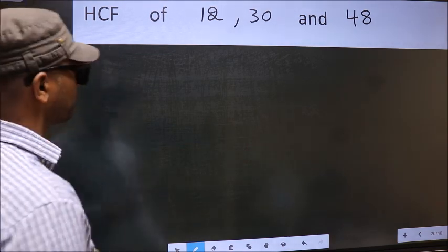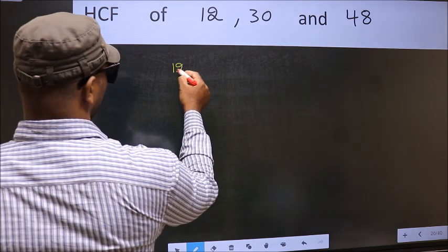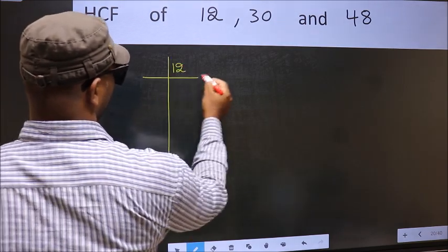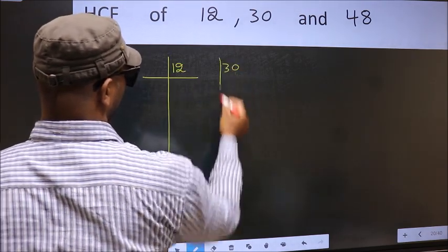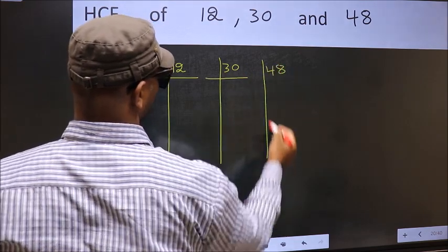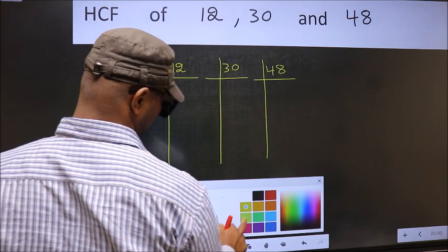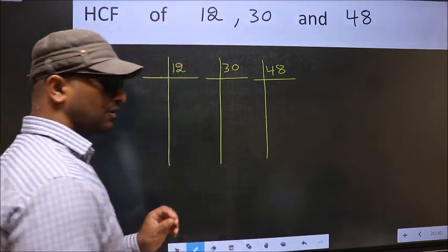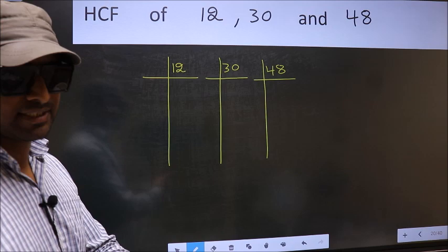What I mean is 12, 30, 48. This is your step 1. Next.